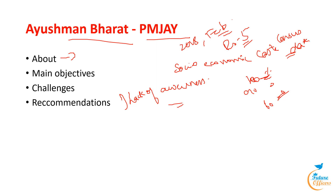The country's unequal distribution and availability of healthcare infrastructure and human resources presents a supply-side constraint for the program. The next challenge is ensuring prompt and sufficient reimbursement of claims to impaneled hospitals, particularly private ones. Numerous hospitals have voiced concerns about lengthy procedures, low package rates, high denial rates, and delayed payments. To maintain sustainability and viability, it is necessary to expedite the claims settlement process and periodically review the package rates.